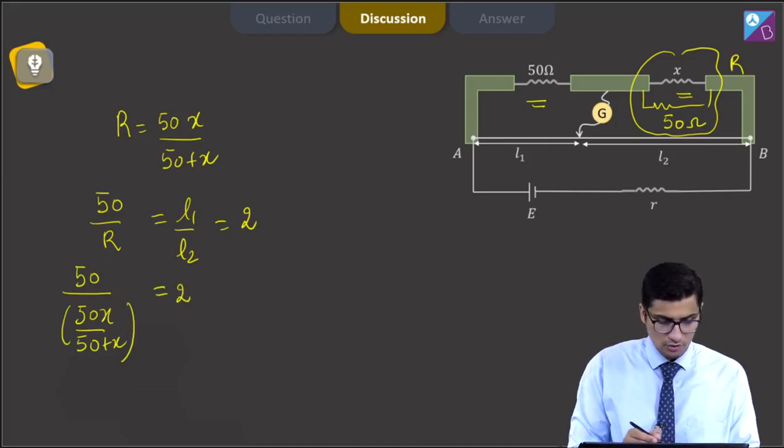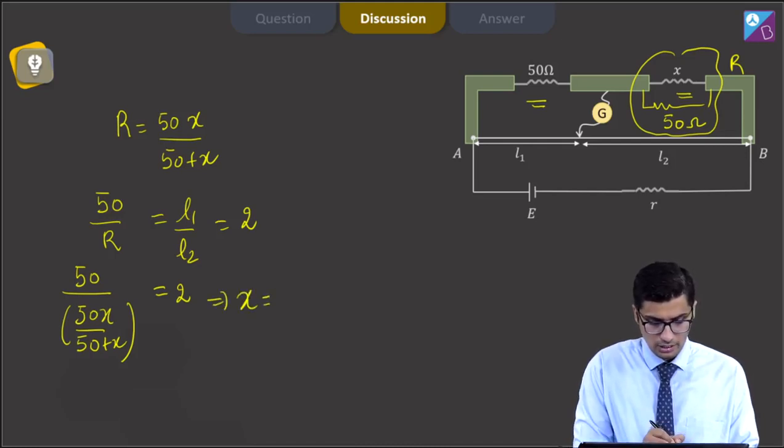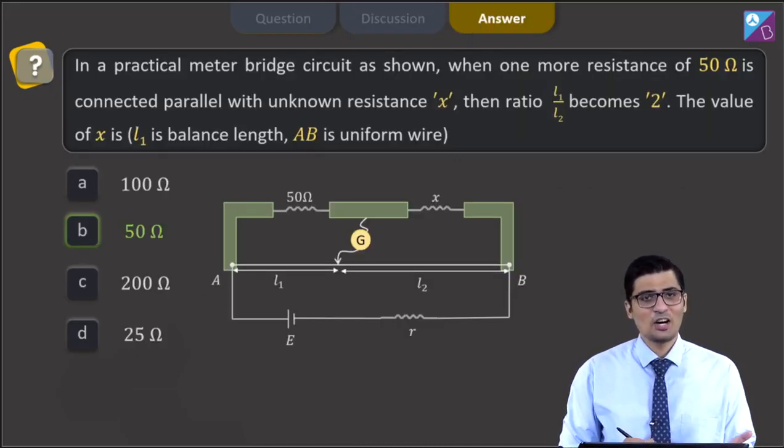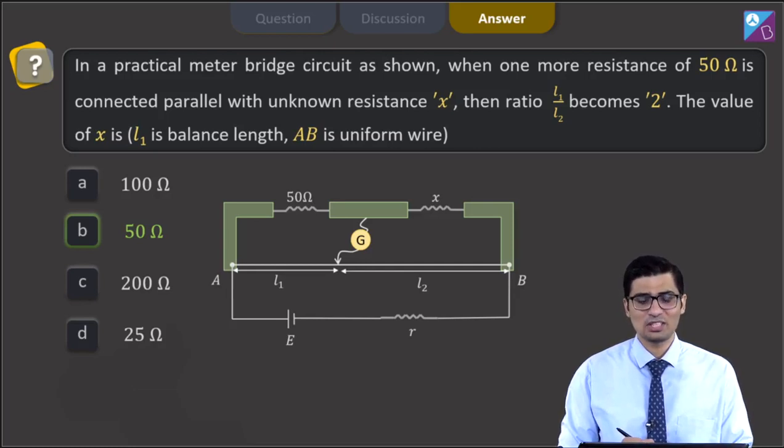Now if we solve it further, we get a value of X to be equal to 50 ohms. Hence, for this question, the correct answer is option B, that is 50 ohms. Now let us proceed to the next question.